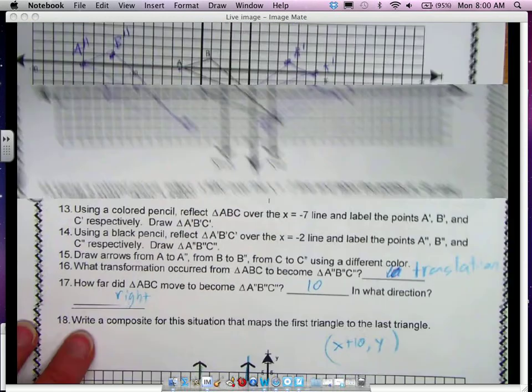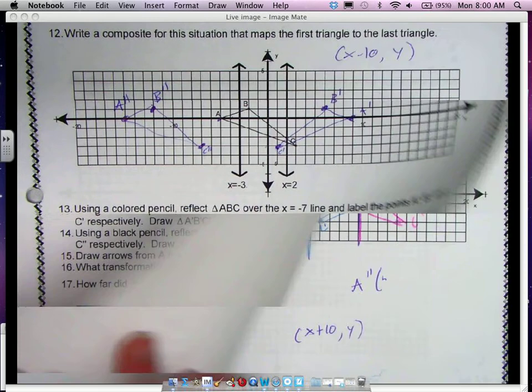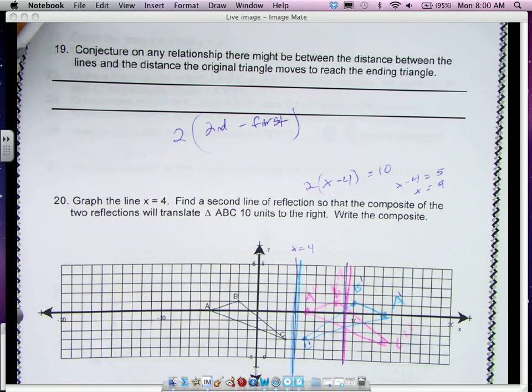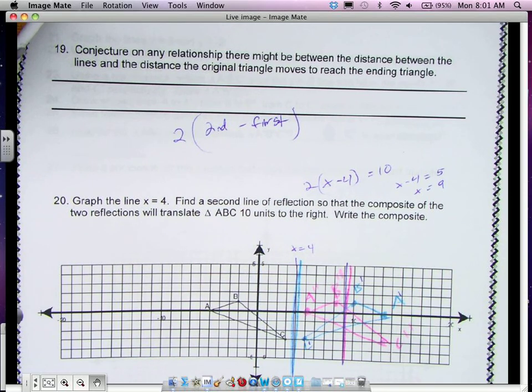Okay, now one of the questions that I think is the most important is kind of understanding what the formula is. If you're reflecting two lines, what do you do? If we're reflecting two lines, we take the second line we're reflecting, subtract it from the first, times it by 2, and we know that's how many units we're going to move right or left.